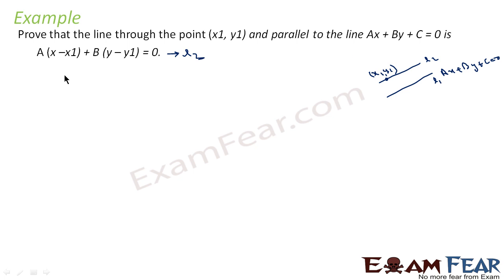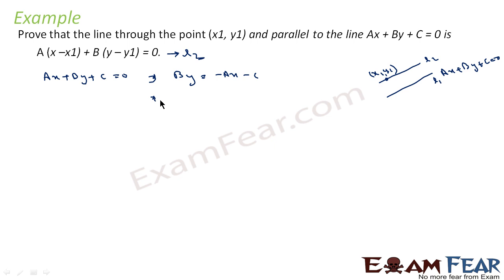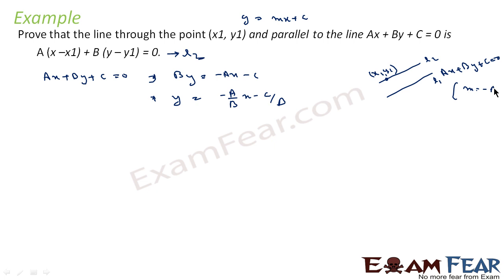The slope of line L2 will equal the slope of line L1 because both are parallel. So let's find the slope of L1 first. We have AX plus BY plus C equals 0. We can rewrite this as BY equals minus AX minus C, or Y equals minus (A/B)X minus C/B. I have divided both sides by B. Comparing with Y equals MX plus C, we get M equals minus A by B.